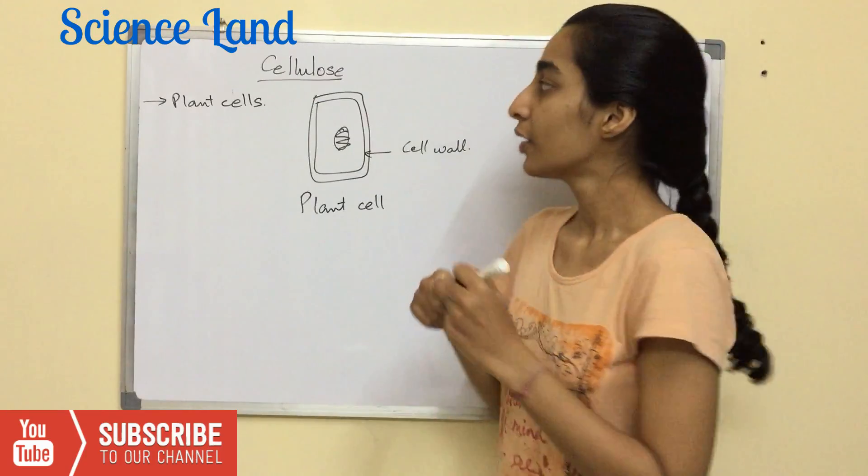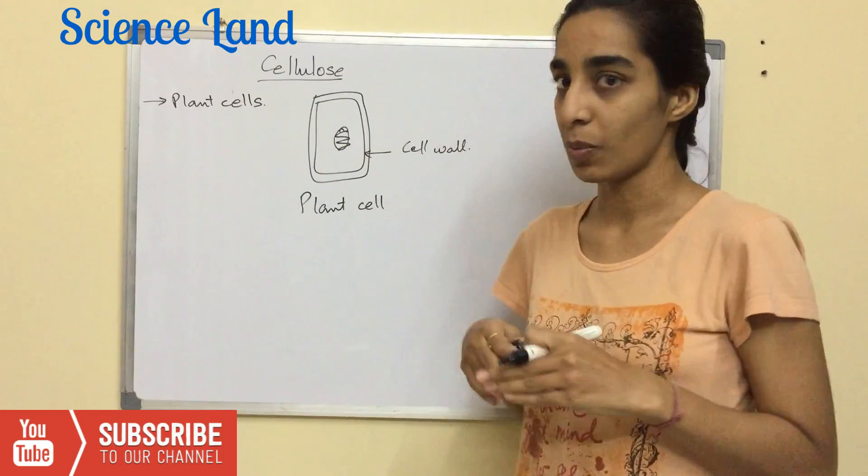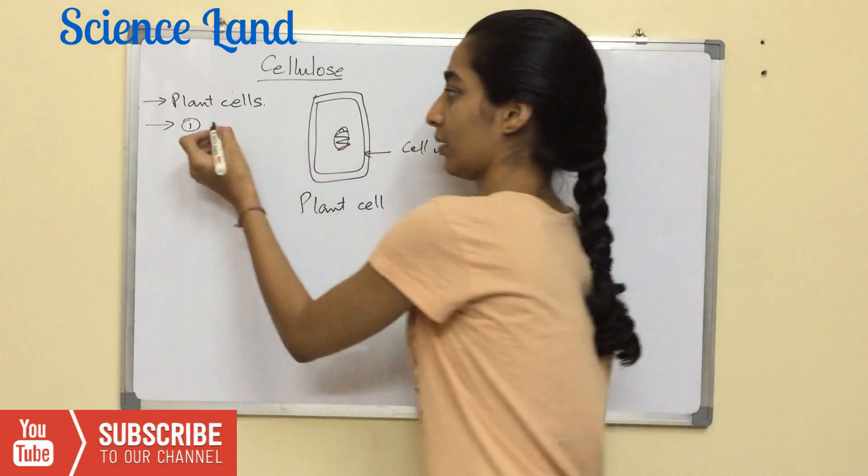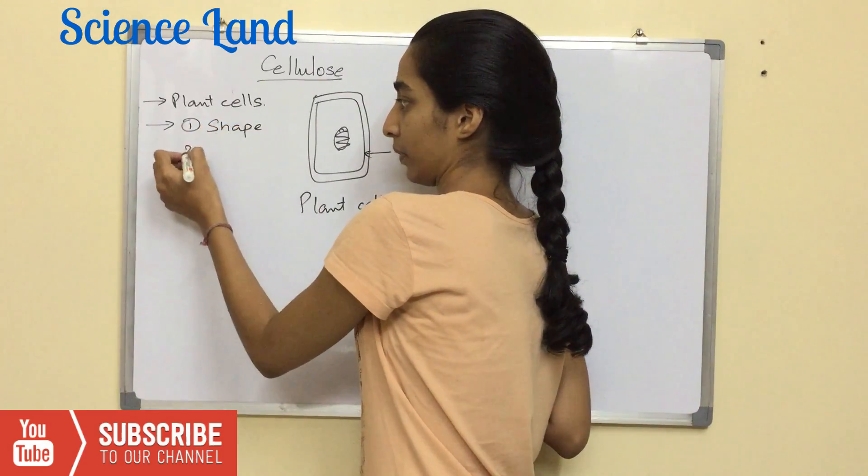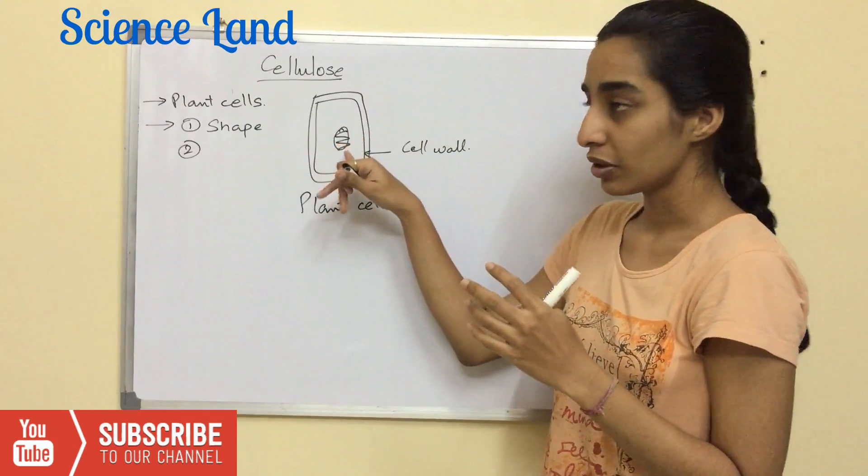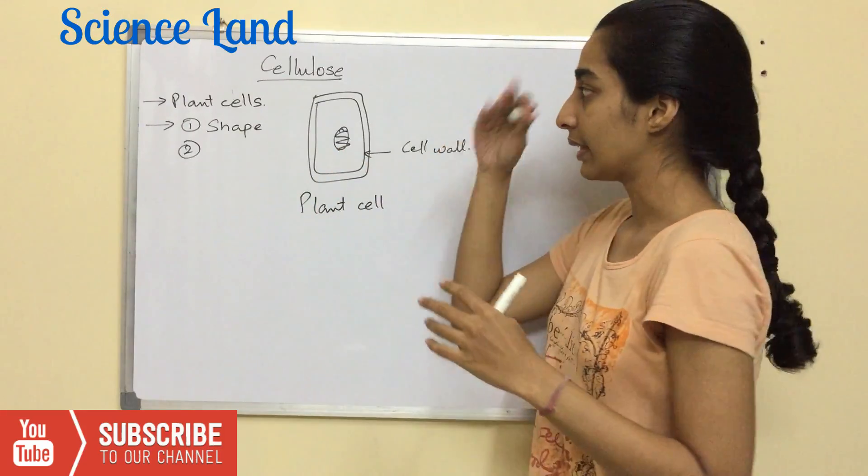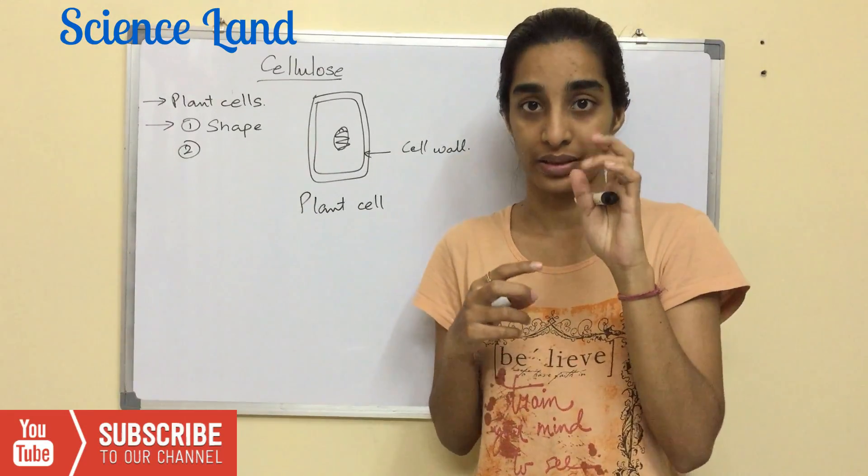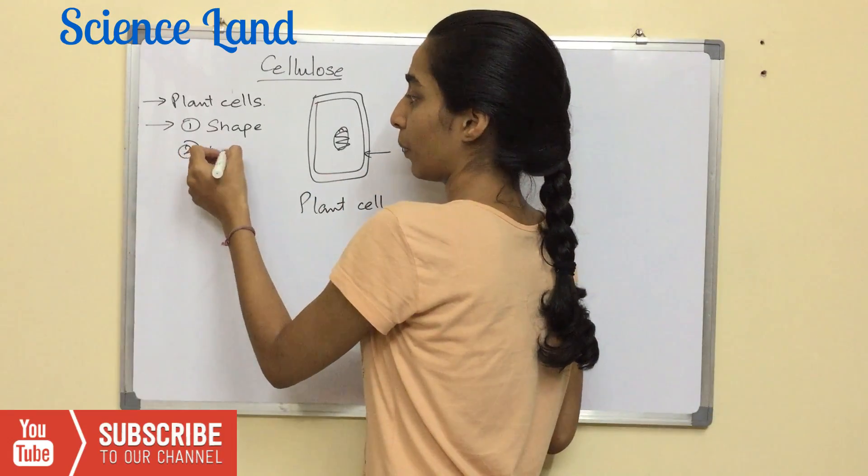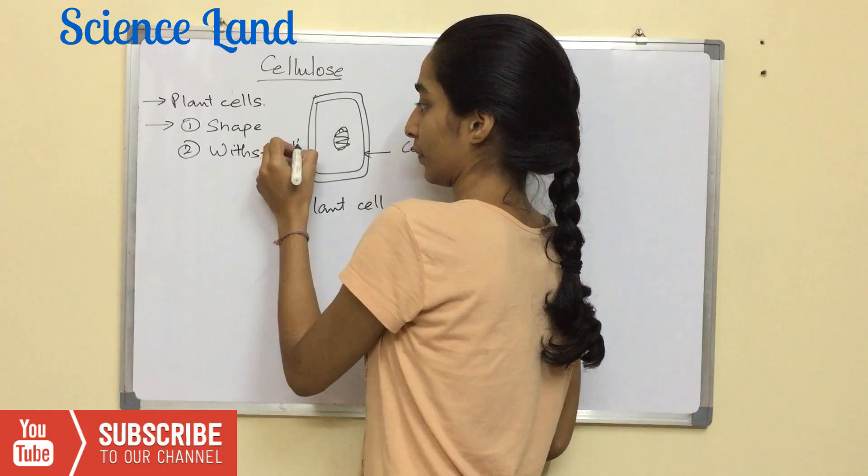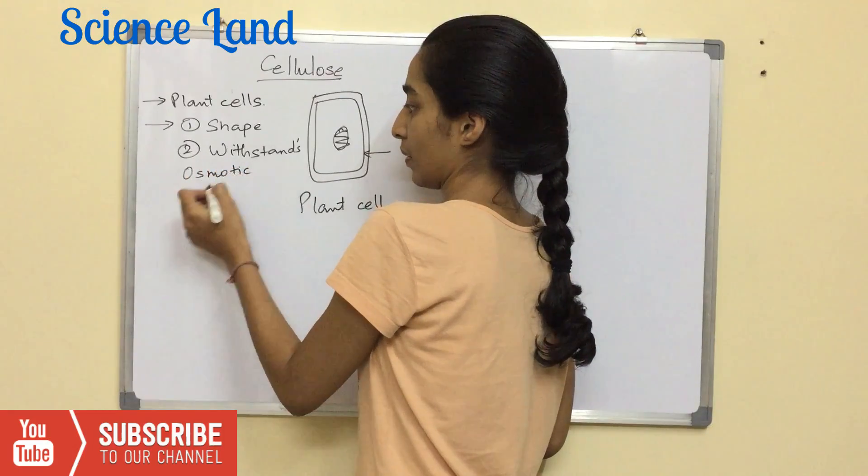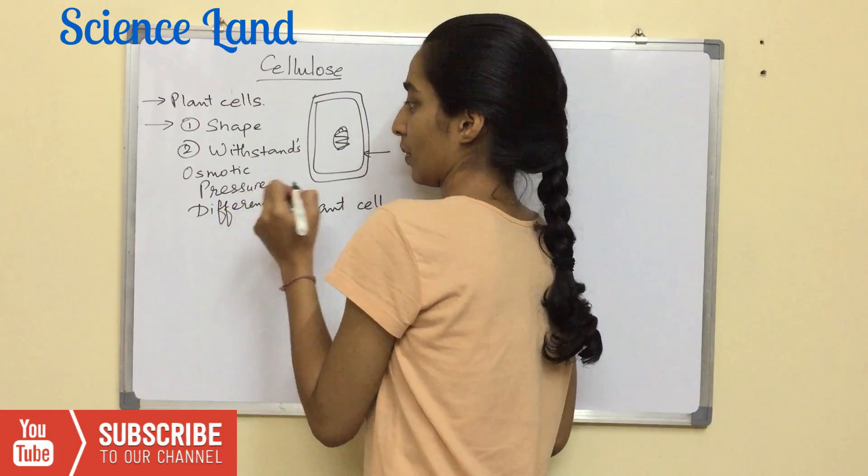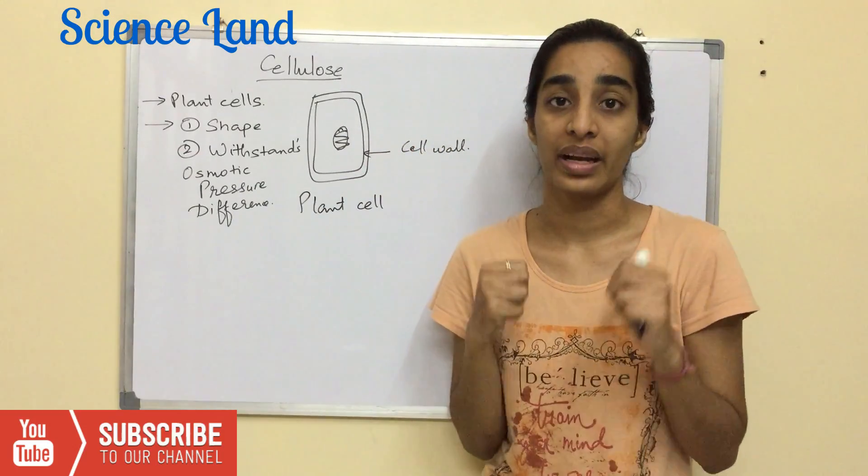If it is present in the cell wall, there has to be some function, right? So what is the function of cellulose in the cell wall? First function is it maintains the shape of the plant cell. Second function is the intracellular osmotic pressure is different than the extracellular osmotic pressure, so the cell wall, as in the cellulose, withstands that pressure difference. And the third function is the load bearing capacity.